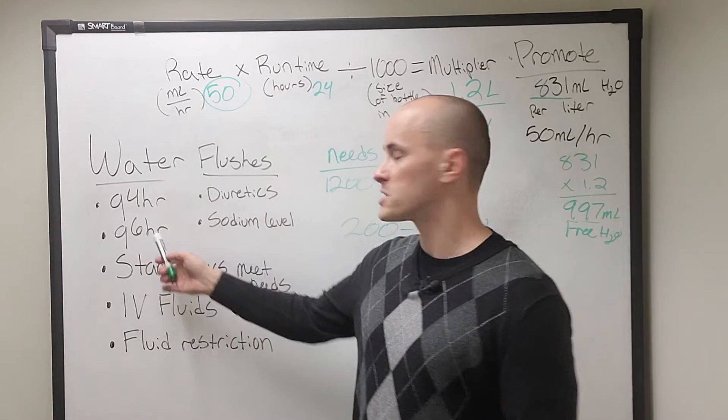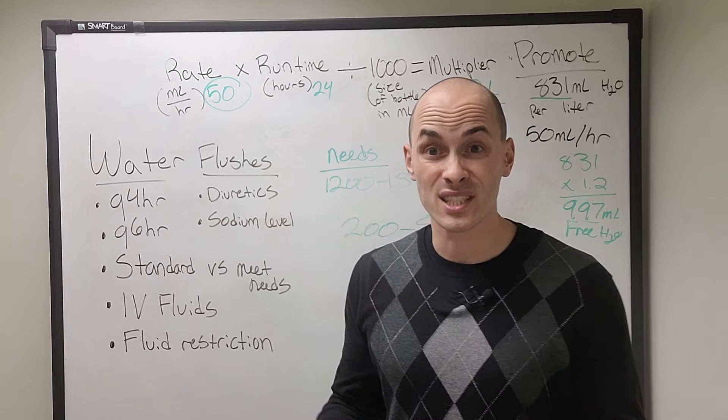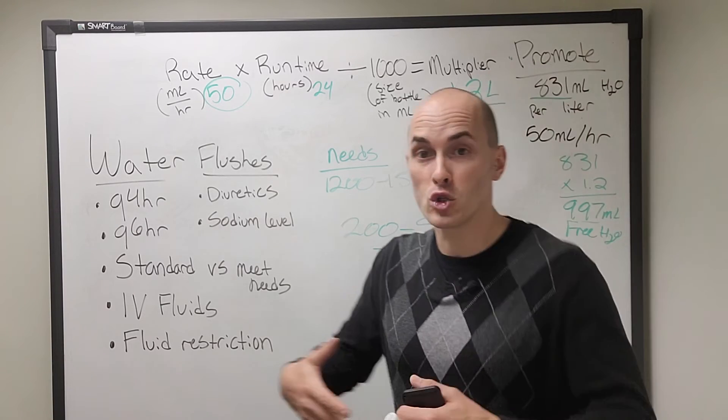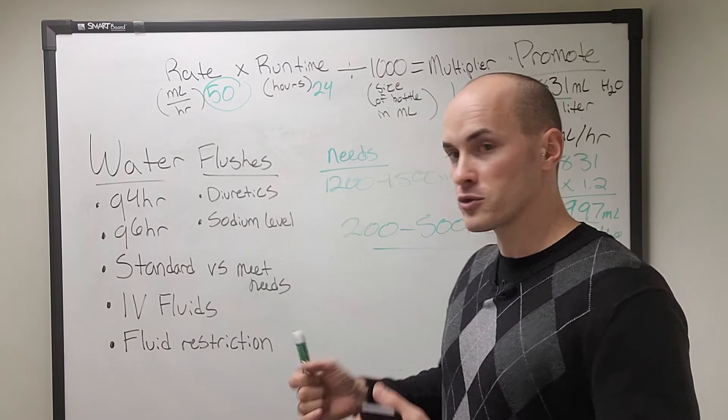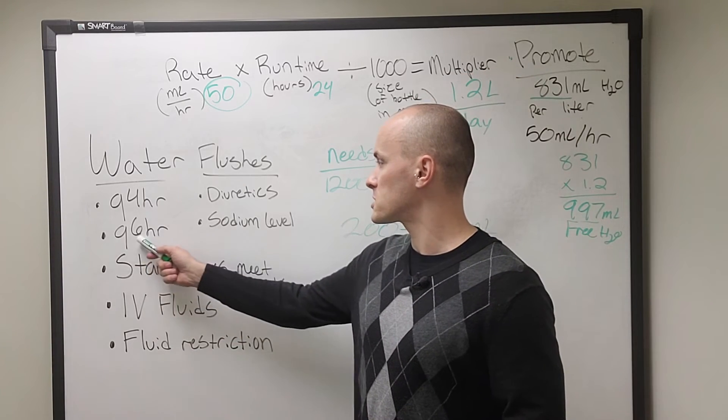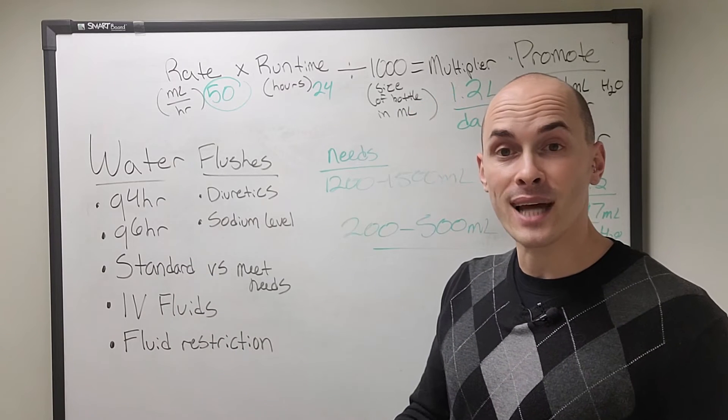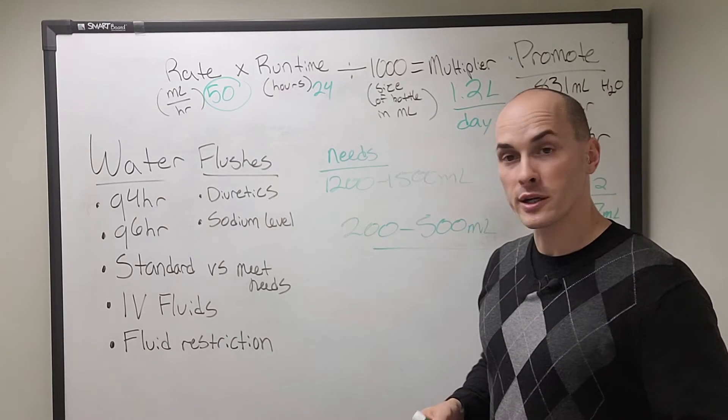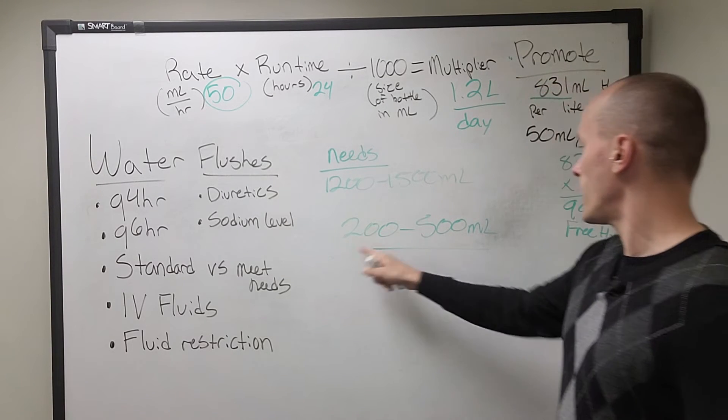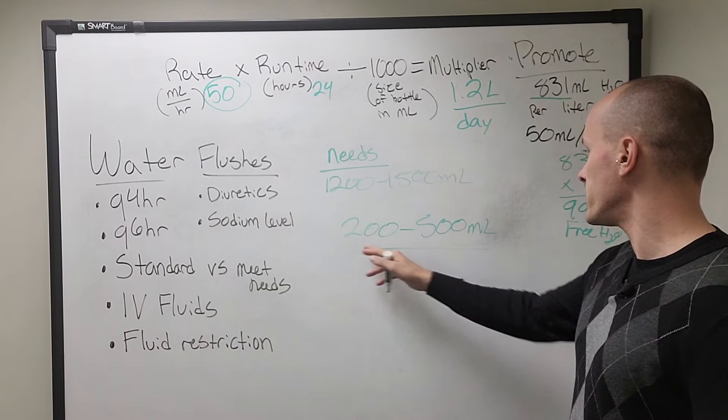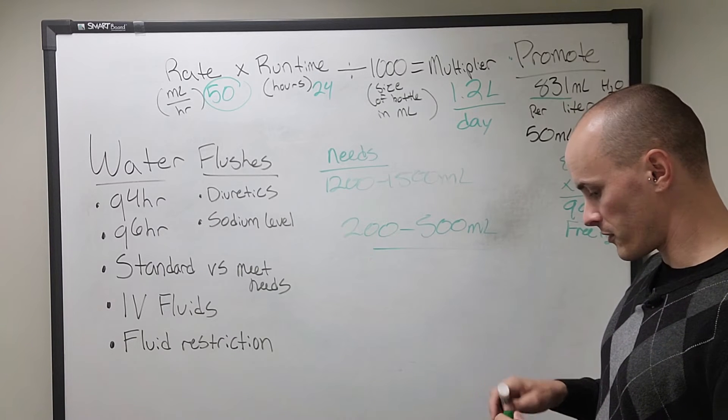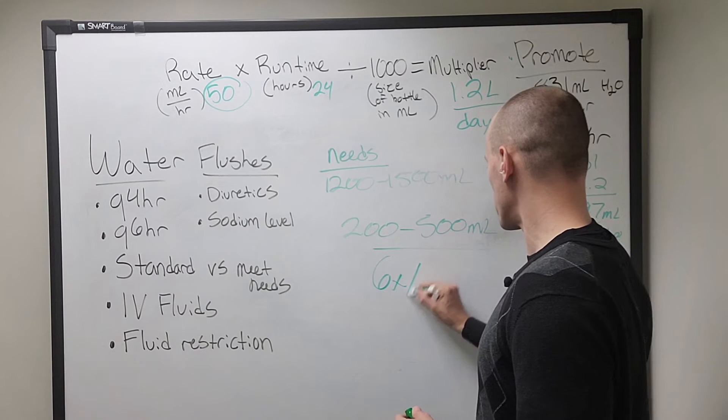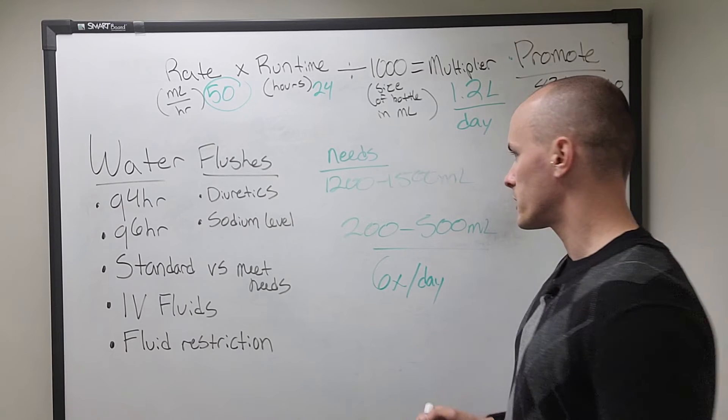You can also do Q6 hours. Let's say your patient needs to have less fluid. We're holding back fluid from them because they have too much fluid on board. They're fluid overloaded. So we can do Q6 hours or every six hours or four times per day. So let's do our Q4. So we'll take how much they need. So they need an additional 200 to 500. And then we can just divide that by six times per day, right? That's Q4.